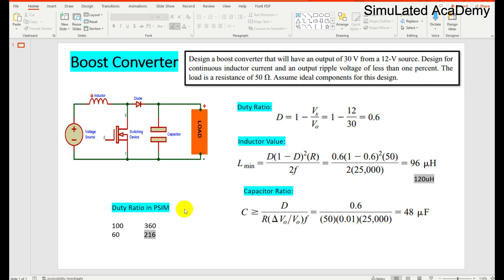To get the duty ratio in PCM, the gate signal for 100% duty ratio corresponds to 360 degrees. So for 60%, this turns out to be 216 degrees. I will explain this later in the design simulation.